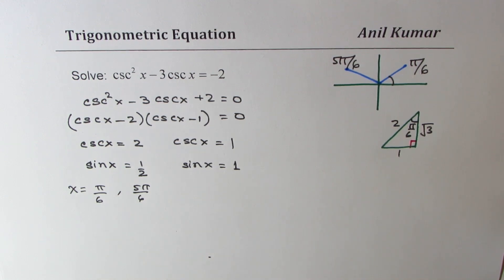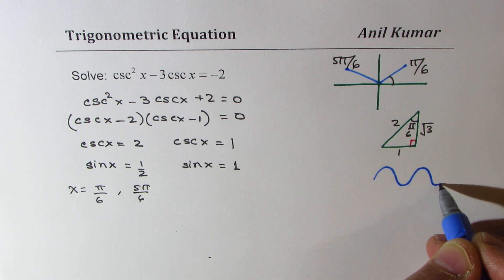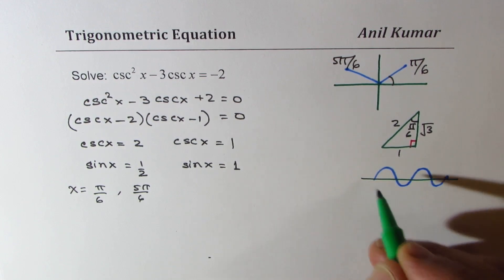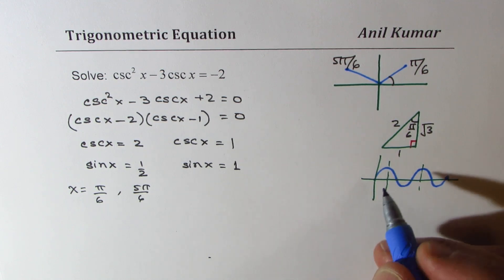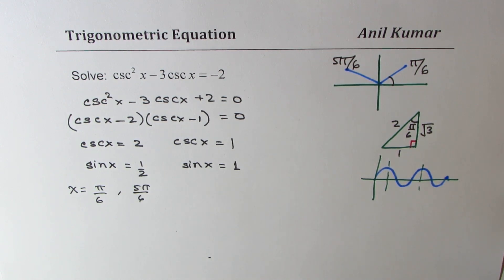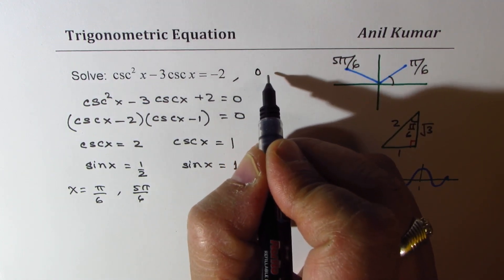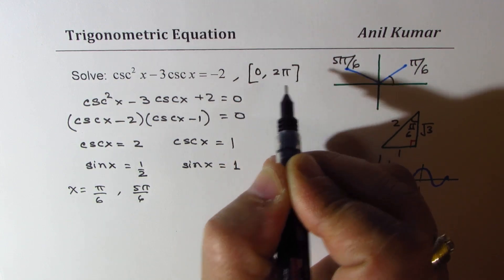We know the sine curve. So this sine curve is basically 1 at pi by 2. So let me say in the domain of 0 to 2 pi we are writing. You could write general solution also.